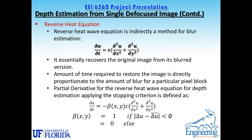The next important topic about the single defocus image is the reverse heat equation. The reverse heat equation is basically an indirect method for blur estimation. It essentially recovers the original image from its blurred version, and the amount of time required to restore the image is directly proportionate to the amount of blur for a particular pixel block. This can be used for estimating depth.